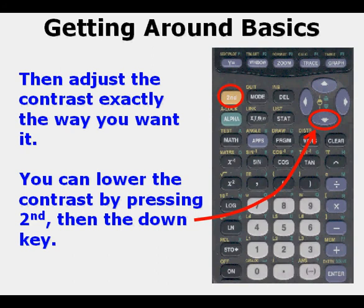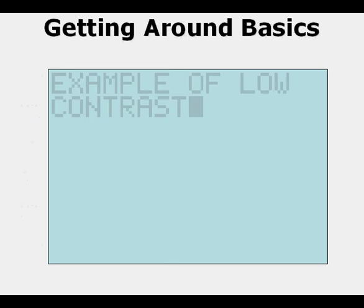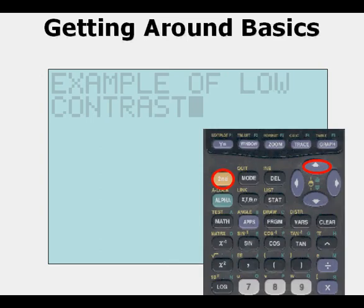You can lower the contrast by doing the opposite, pressing 2nd then the down arrow key. This would be an example of normal or high contrast and this is what low contrast looks like. You can up it again by pressing 2nd then the up arrow key repeatedly.